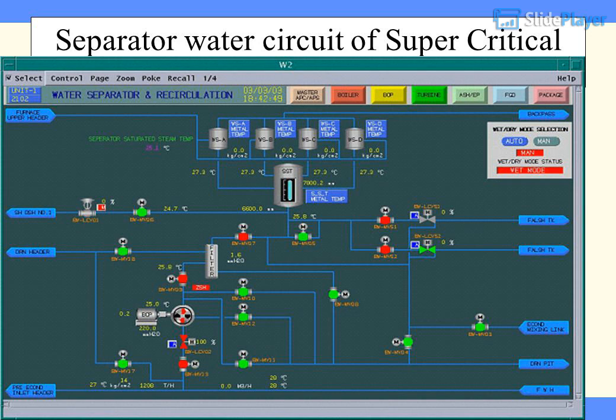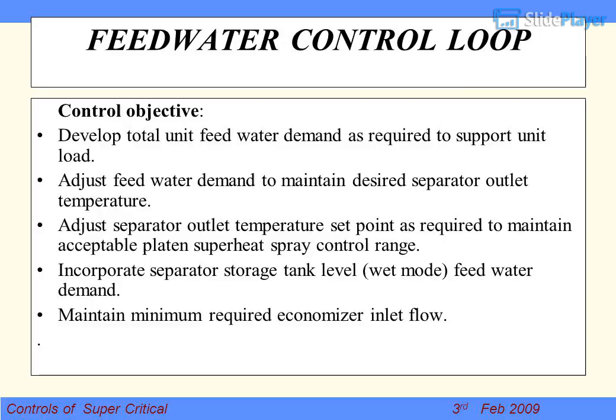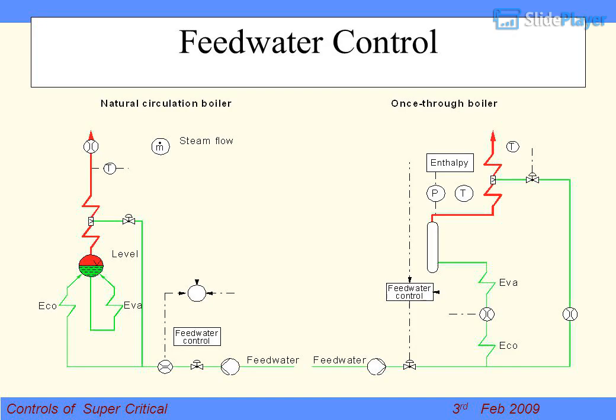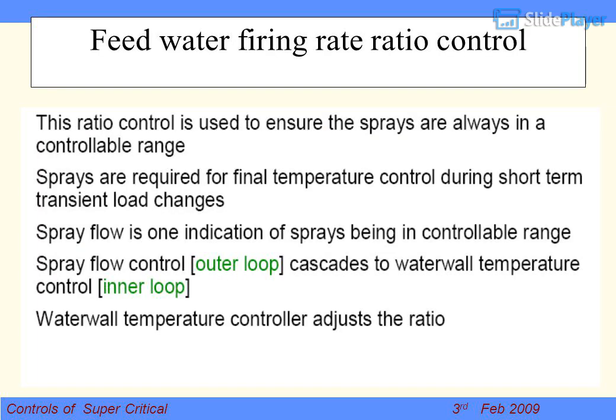Feed Water Control Loop — Control Objective: develop total unit feed water demand as required to support unit load. Adjust feed water demand to maintain desired separator outlet temperature. Adjust separator outlet temperature set point as required to maintain acceptable platen superheat spray control range. Incorporate separator storage tank level wet mode feed water demand and maintain minimum required economizer inlet flow. The most important control loop — there is no storage luxury. Feed water must respond per demand. This shows a comparison of how feed water is controlled in drum type versus once-through.